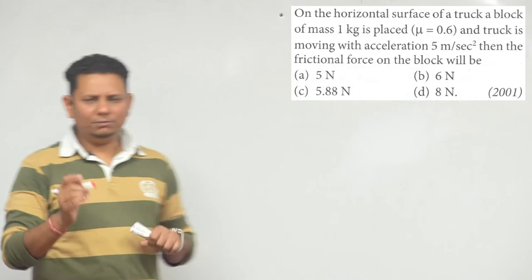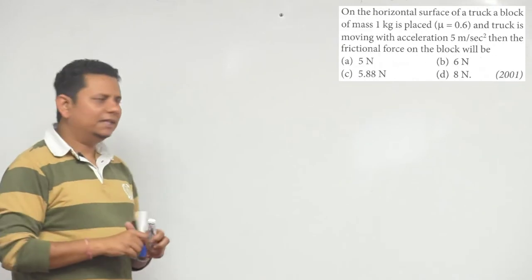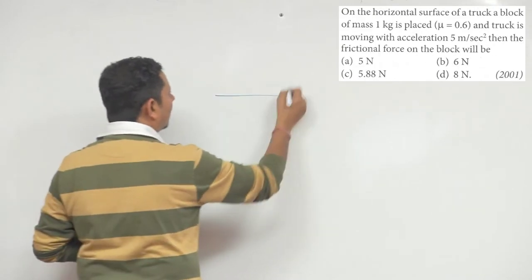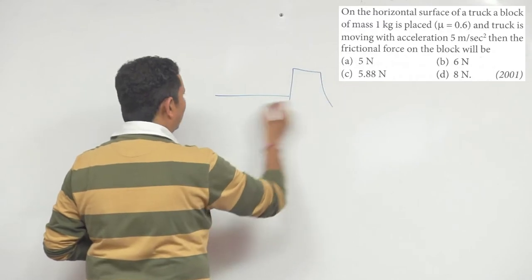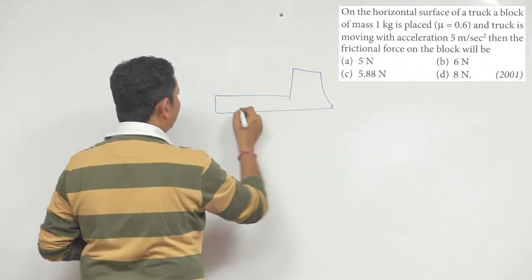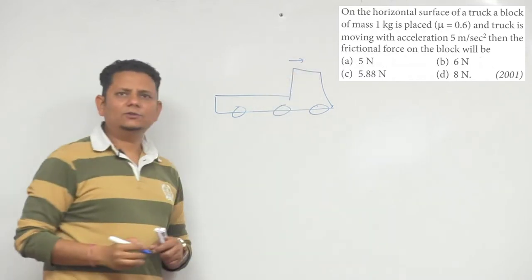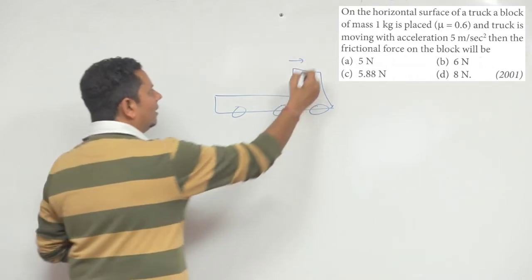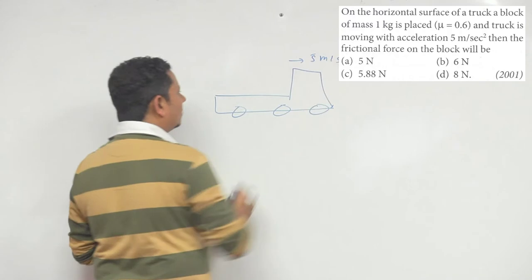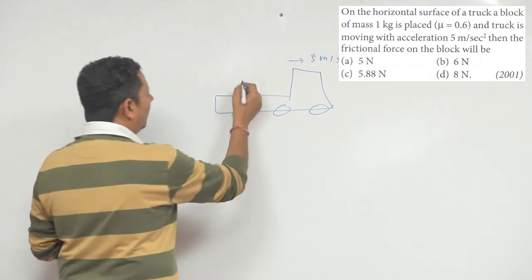This is a very conceptual question, so let me explain. This is your truck, let's say this is the truck, alright? And the truck is moving forward. The truck's acceleration is given as 5 meter per second square.